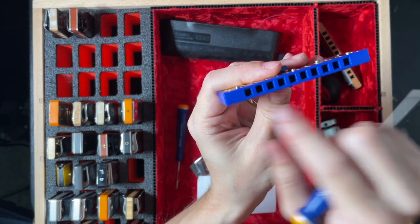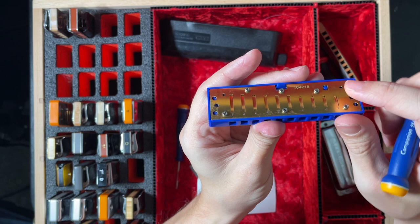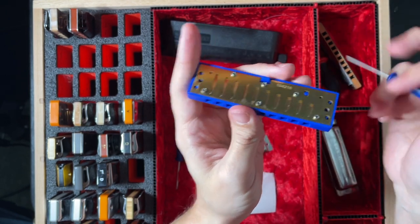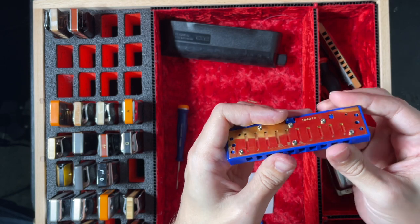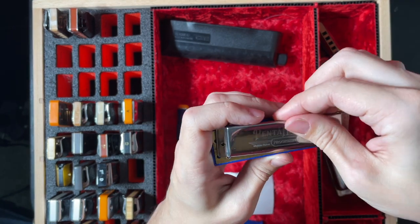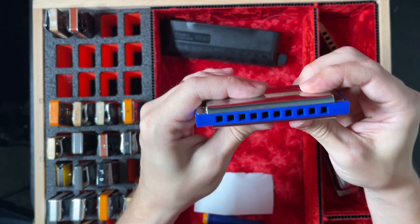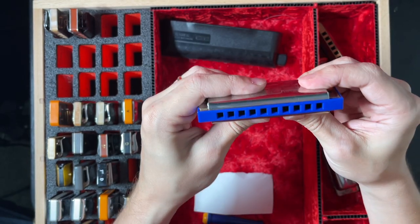When you're all done and set up, you would just put the cover plates back on and screw everything back together, and then you have a better functioning instrument. If your harmonica is the problem, this will fix it usually.